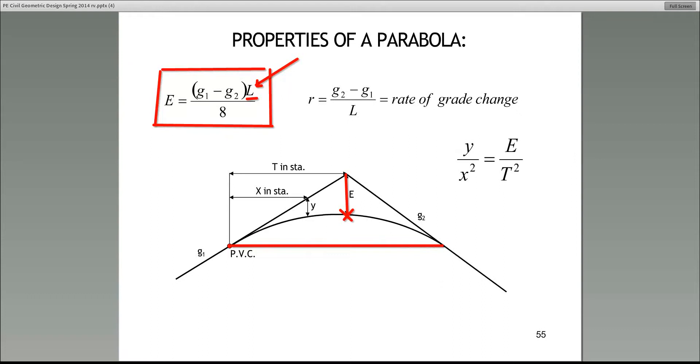Now, let's go back to the previous slide. So now, the first equation here, top left, we know what E is. G1, G2, I just told you. L, I expressed what that is. And the denominator is just the number 8. Now, let's look at the next equation. And by the way, that next equation is important because it does show up on the test. And what they're asking you to do is to find what's known as the rate of grade change. All you have to do is use that equation. R is equal to G2 minus G1 over L.